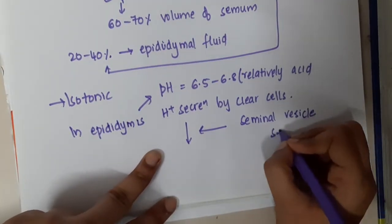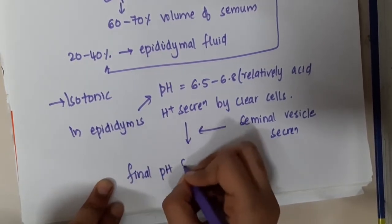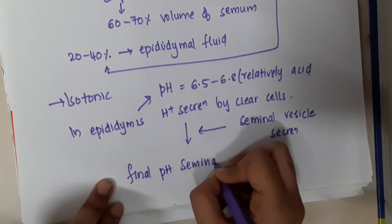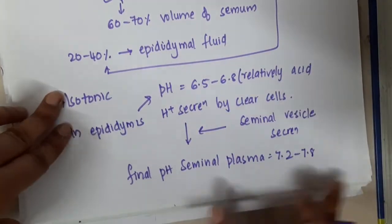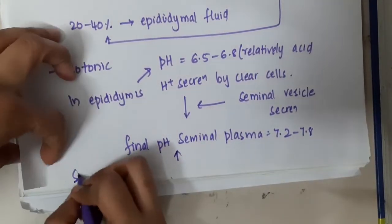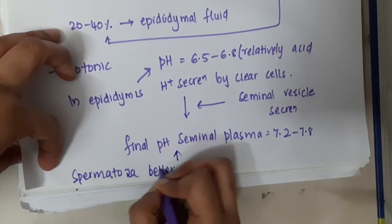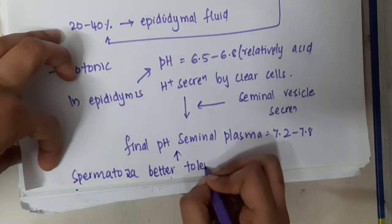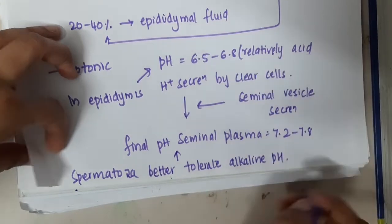Once the seminal vesicle secretion is added, the final pH of seminal plasma, also called semen, is around 7.2 to 7.8. Why is the pH increased? Because spermatozoa better tolerate alkaline pH than acidic pH. As a result, seminal plasma is made alkaline by the seminal vesicle.